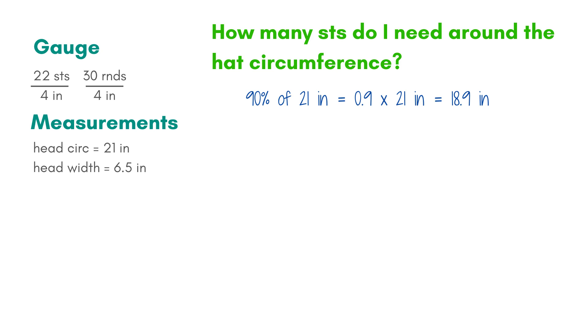Now the math. 90% of 21 inches is 0.9 times 21 inches or 18.9 inches. That just means I want my hat to be about 18.9 inches around, but it will be okay if it's just a little bigger or a little smaller than that. Next, I need to figure out how many stitches are in 18.9 inches.